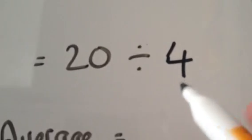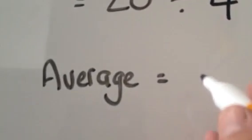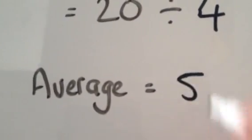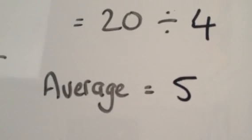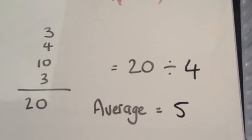Basic facts, twenty divided by four, we can find the average, or the mean, is equal to five. And that's how you do it. Check out another video for some more examples.